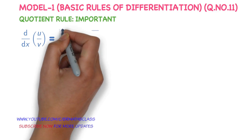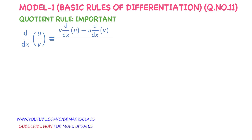What is quotient rule? Derivative of u/v equals v times derivative of u, minus u times derivative of v, divided by v squared. This formula is known as the quotient rule. To remember this formula there is a small trick: the derivative of u/v always starts with v, so that no confusion will come while applying this formula.